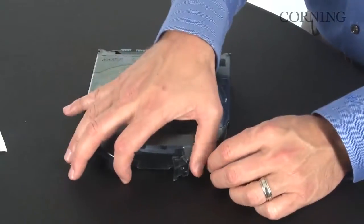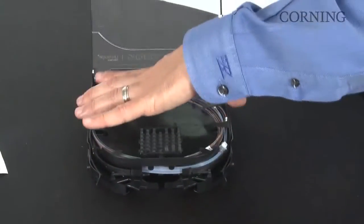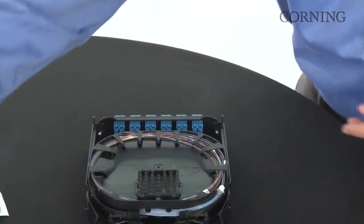The next step is to open the pigtailed splice cassette. Remove the Lexan cover by applying a slight bend.